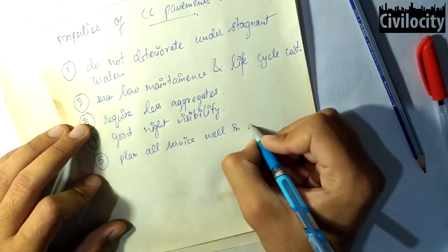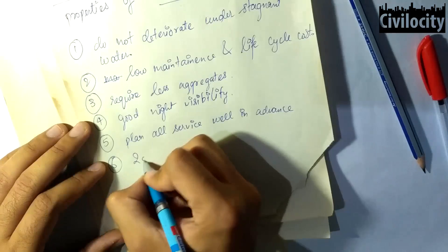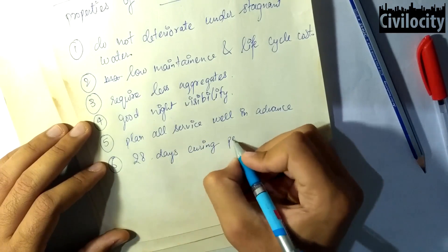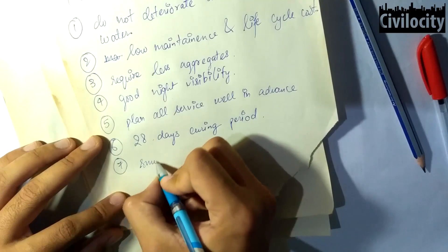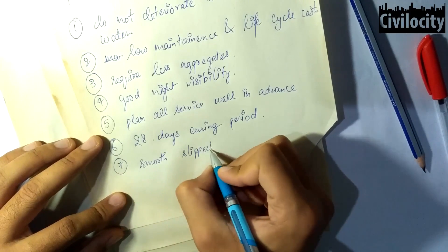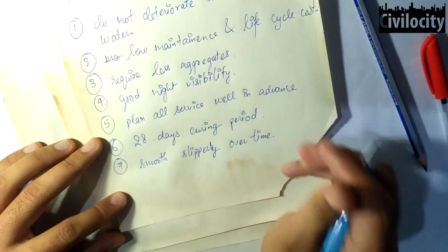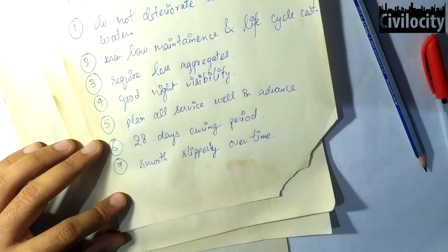Also you cannot open your rigid pavement immediately after laying because it requires a long time of 28 days for curing. Cement concrete pavements are likely to become too smooth or slippery during the long service life and it is not possible to restore a failed or badly cracked cement concrete pavement.